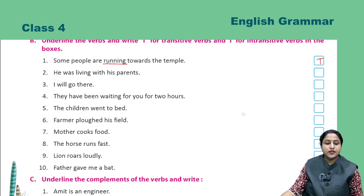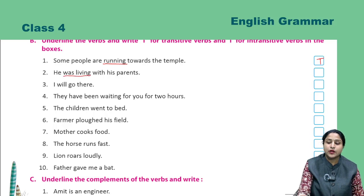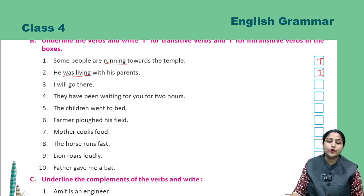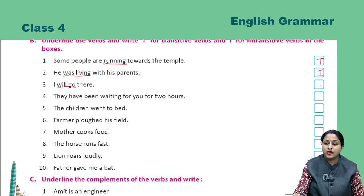Second: 'He was living with his parents.' Here 'was living' is the verb, and this is an intransitive verb — I. Next: 'I will go there.' The verb is 'will go', and this is also intransitive — I.